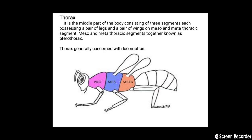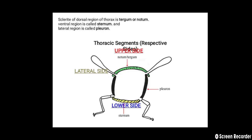The second body region of an insect is the thorax — the middle part of the body consisting of three segments, each possessing a pair of legs. The meso- and metathoracic segments each bear a pair of wings and together are known as pterothorax. The thorax is generally concerned with locomotion. The three segments are the prothorax, mesothorax, and metathorax. The sclerite of the dorsal region of the thorax is the tergum or notum; the ventral region is the sternum; and the lateral region is called the pleuron.